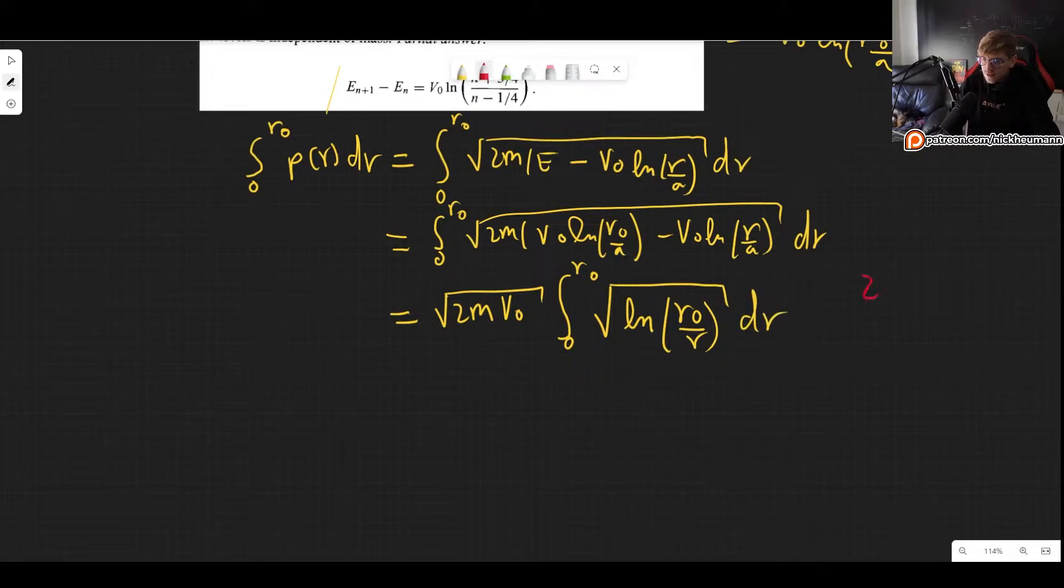So how do we integrate this? Well what we can try is say let Z be equal to the natural log of everything that is inside of the square root, so R0 over R. And now we need to find dR. I would personally like to first find R and then take the derivative.